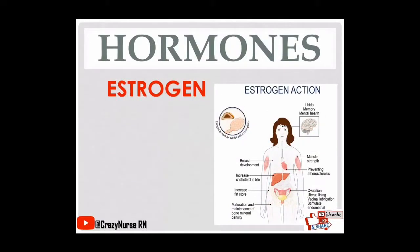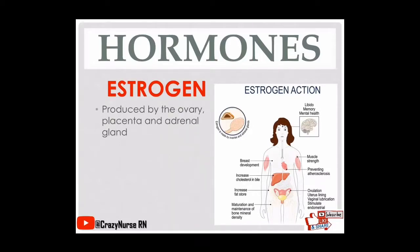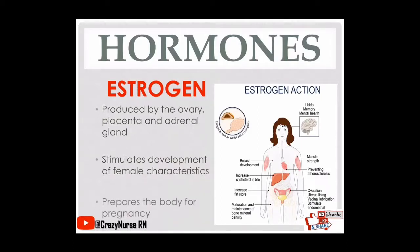Now let's proceed to hormones. First, we have estrogen. It is produced by the ovary, placenta, and adrenal gland. It stimulates the development of female characteristics and also prepares the body for pregnancy. So these are the functions of your estrogen.